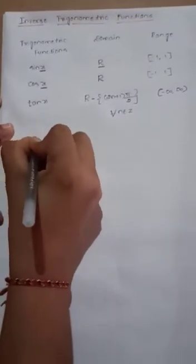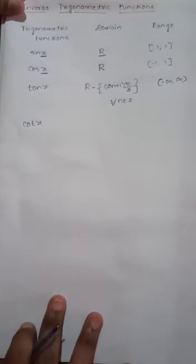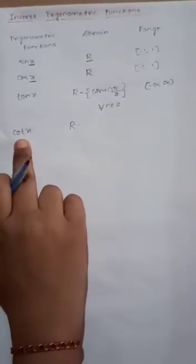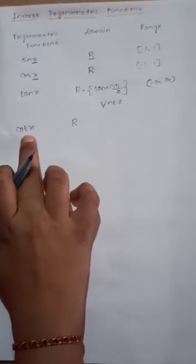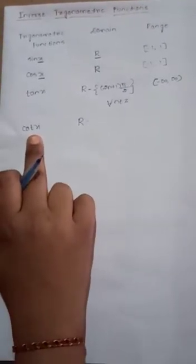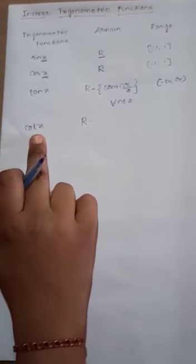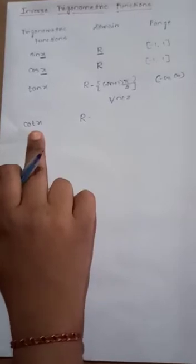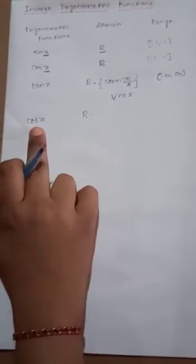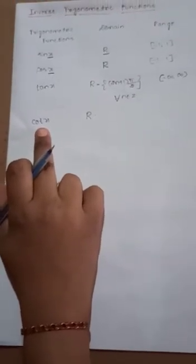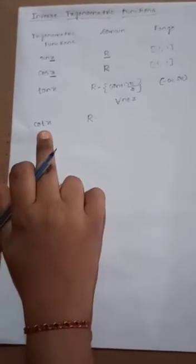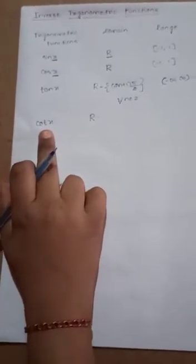Next is cot x. Cot x is defined as cos x / sin x. We consider the domain as the set of all real numbers and substitute values. Cot 0° = cos 0/sin 0 = 1/0, which is not defined at 0°. Cot 30° = √3, cot 45° = 1, cot 60° = 1/√3, cot 90° = 0.